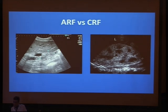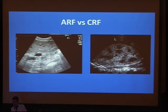Can ultrasound answer whether the disease is acute or chronic? In some cases it can. If the kidney is enlarged with prominent hypoechoic pyramids and increased parenchymal echogenicity, it is highly suggestive of acute parenchymal disease or acute kidney injury. While a small-sized kidney with loss of corticomedullary differentiation and increased parenchymal echogenicity indicates chronic renal disease.